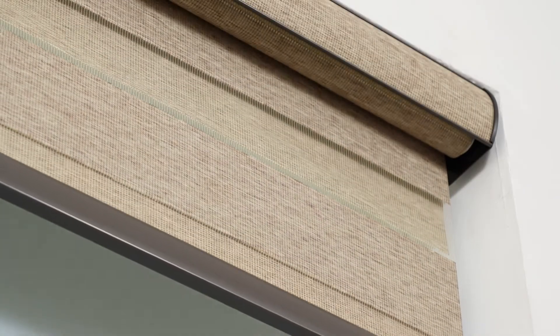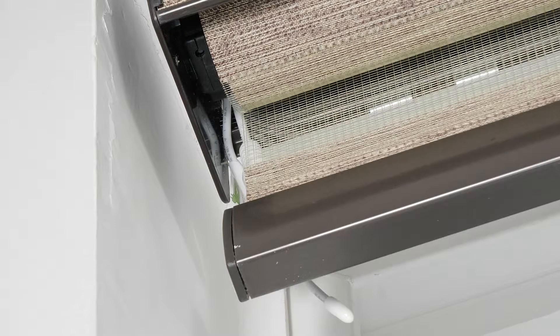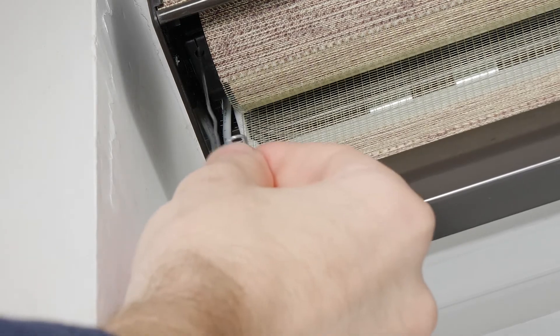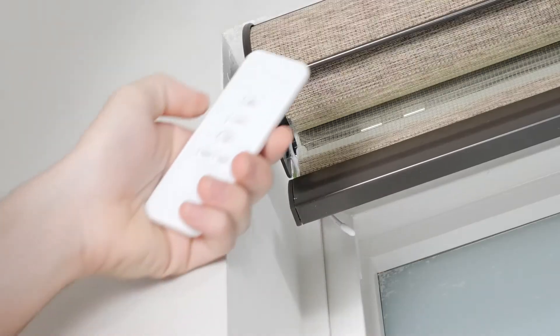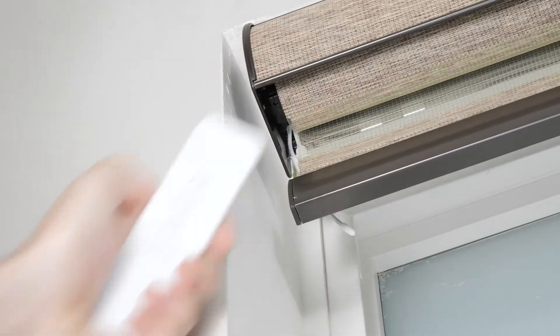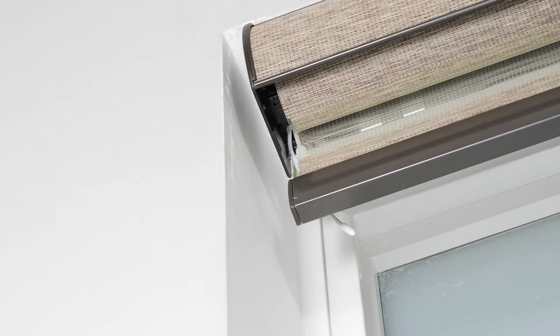Now, let me show you how to pair your shade to your remote. Select the channel that you would like your shade programmed to. Then press and hold the program button on the motor head until you hear a beep and the shade quickly jogs up and down. Press the up button and you will see the shade jog again. Your motor is now paired with the channel you selected.